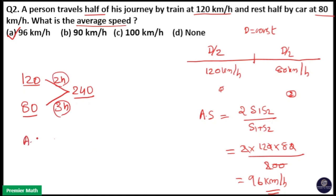Average speed will be total distance equal to half the distance 240, then total distance will be 2 into 240 divided by total time equal to 2 plus 3, 5 hours. So 5 into 48 is equal to 96 km per hour.